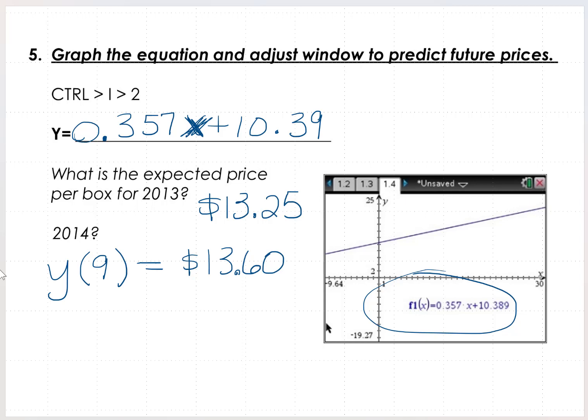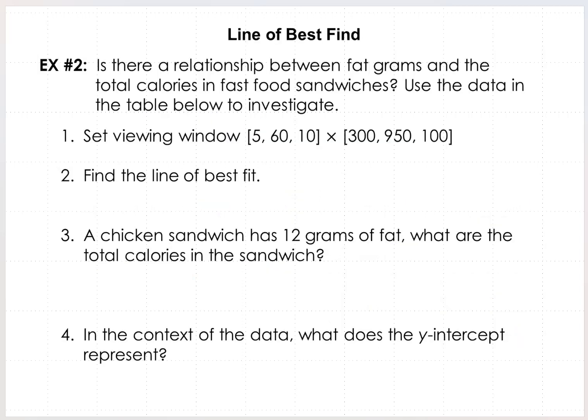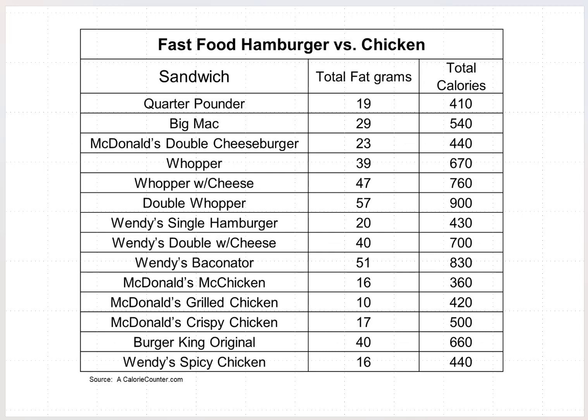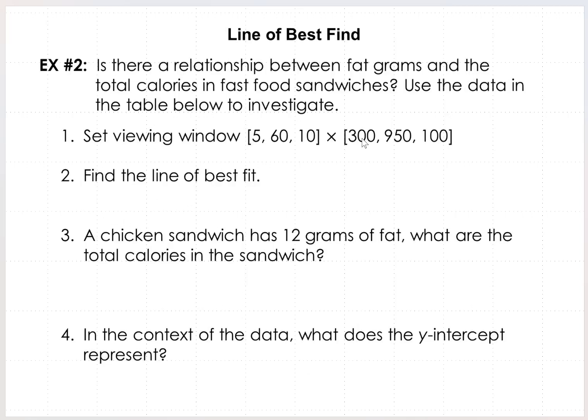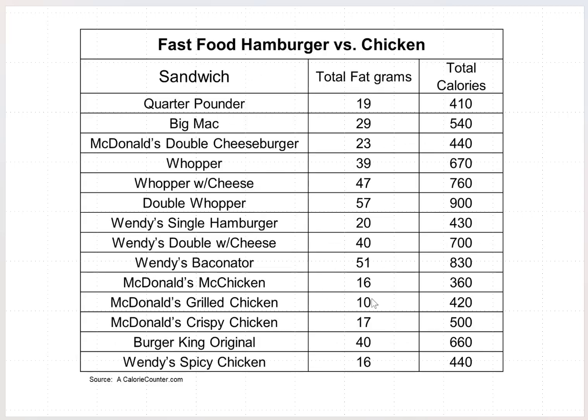In example 2, we want to know is there a relationship between the fat grams and the total calories in fast food sandwiches. And we're going to use the data on the next table here from different restaurants. And we're going to set our view window for 5, 60, 10 on x and 300, 950, 100 on y to be able to find the line of best fit. So let's go back to the calculator and get that information set up using the fat grams in the first column and the total calories in the y column.